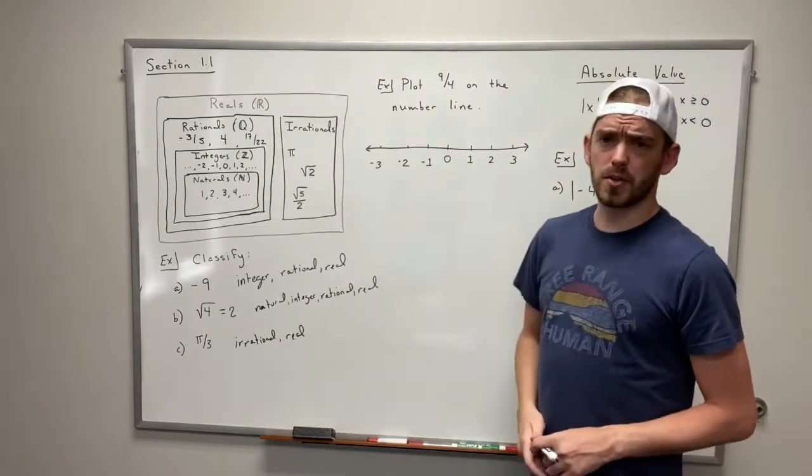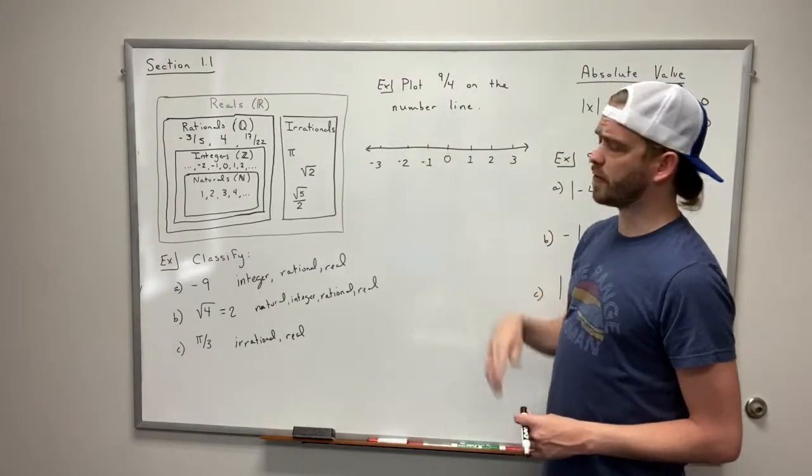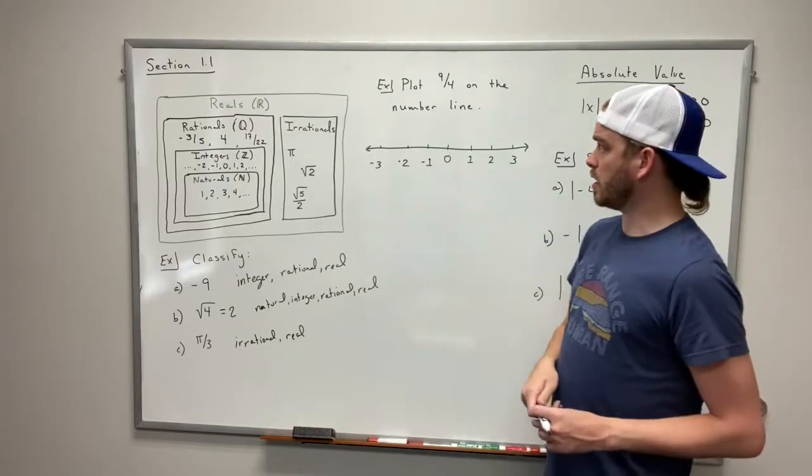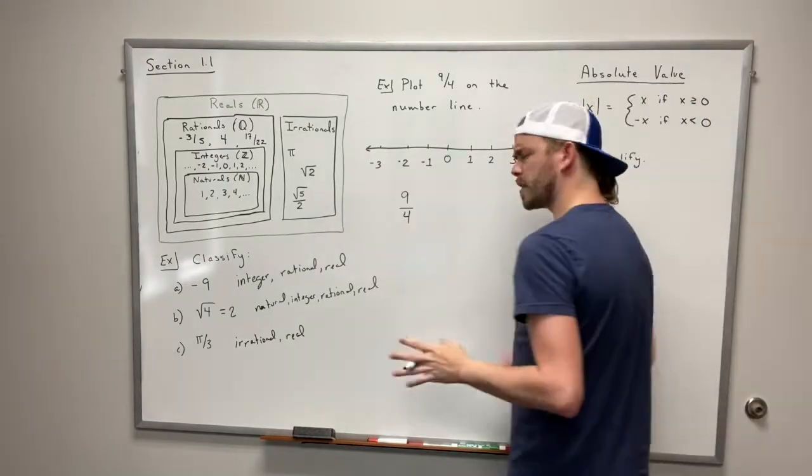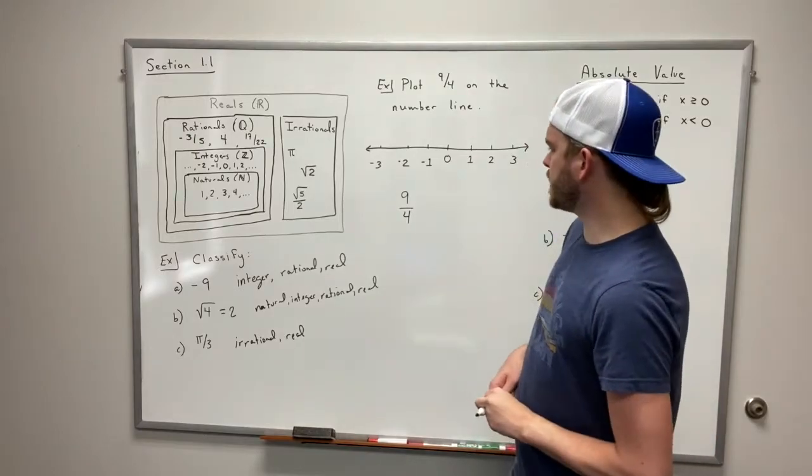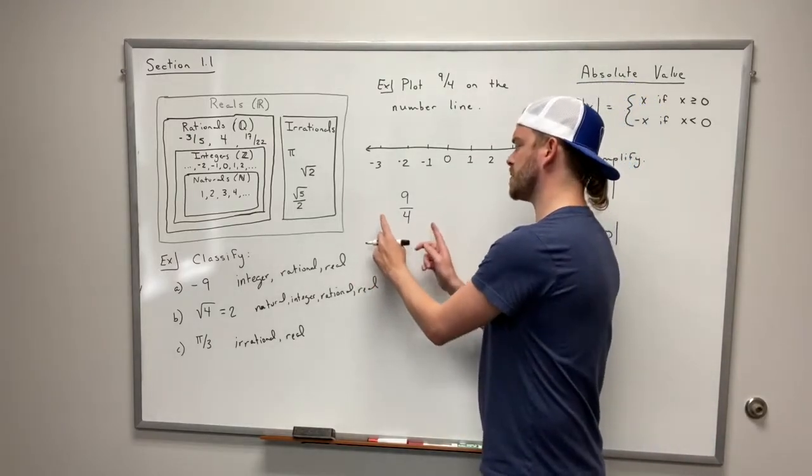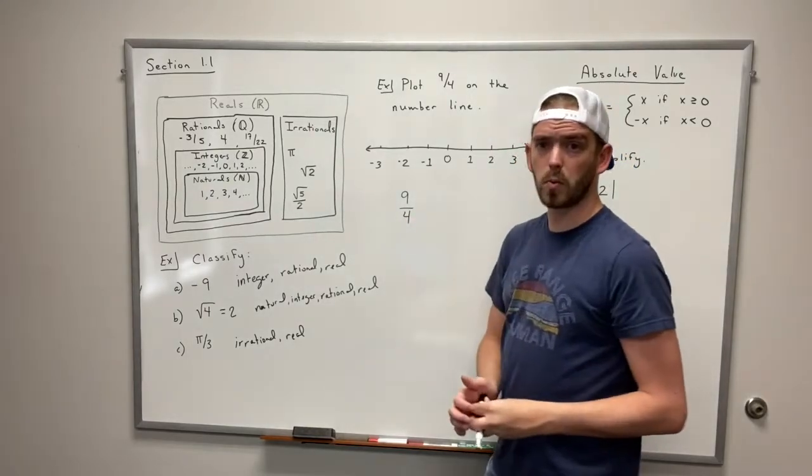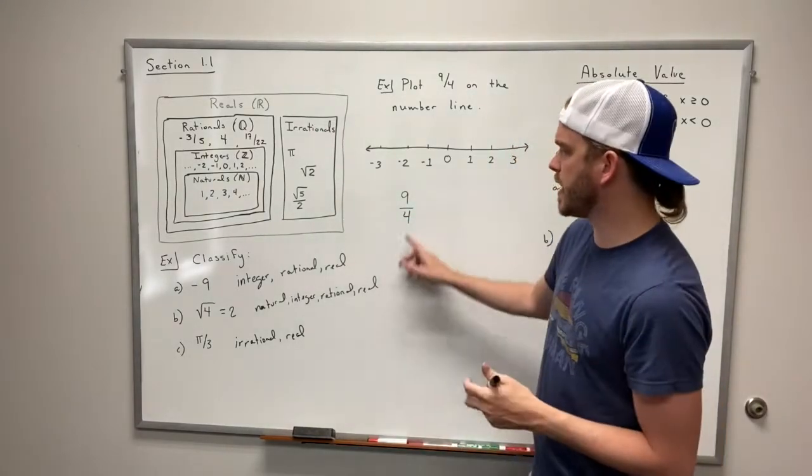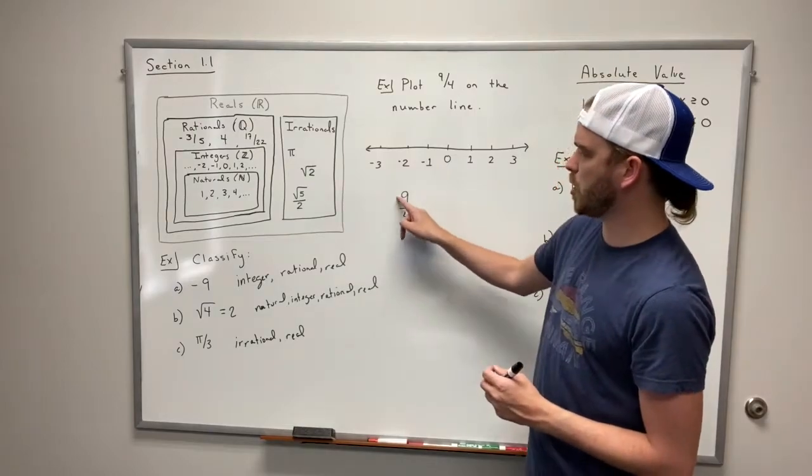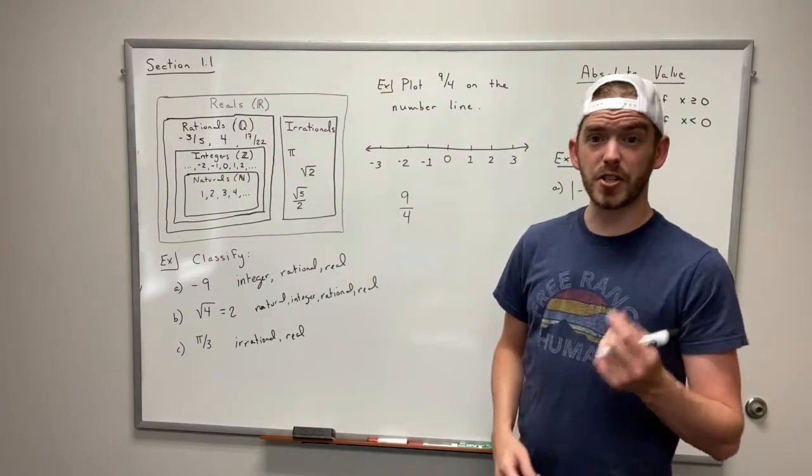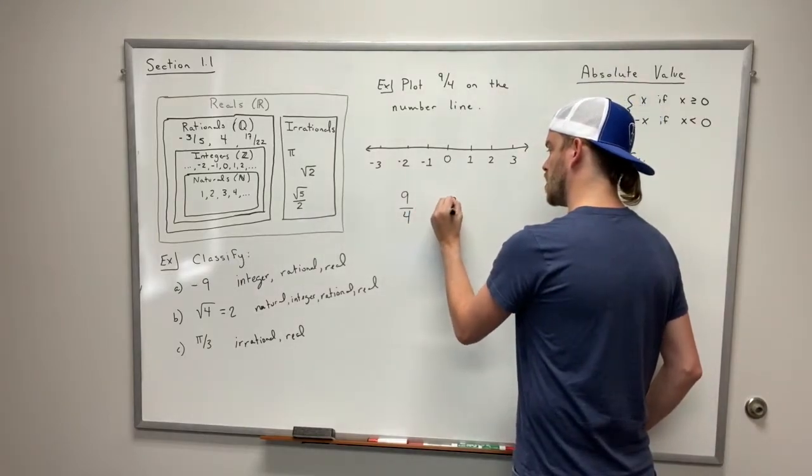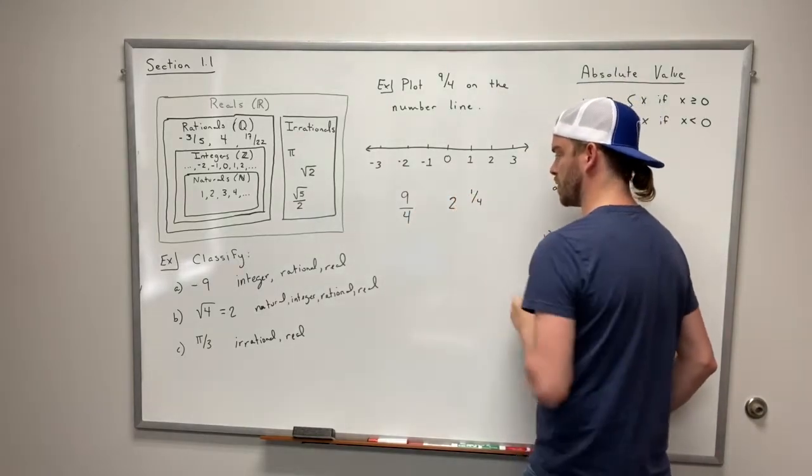What if we ask you to plot a fraction like 9 fourths? That's going to take a little bit of extra work. There are a couple of different ways to solve this. You can try to find the two integers that it's between by looking for your multiples of 4. What I like to do though is I say how many times does 4 go into 9? 4 goes into 9 two times with some left over. It's going to be 2 times with 1 fourth left over. We divide that.